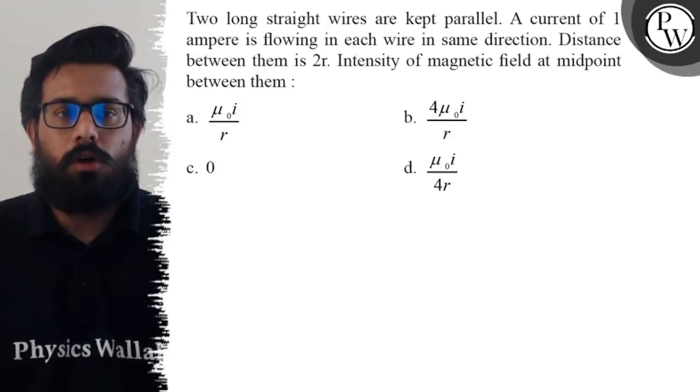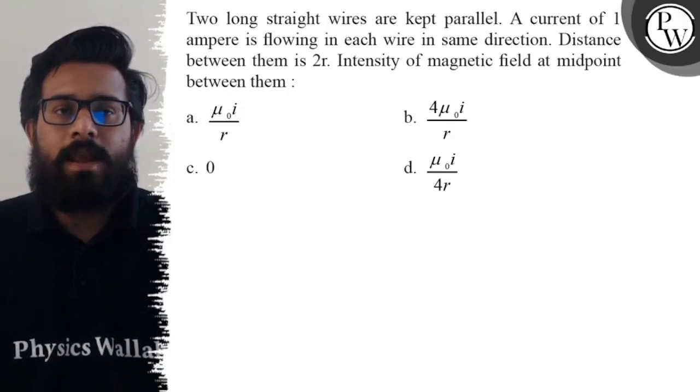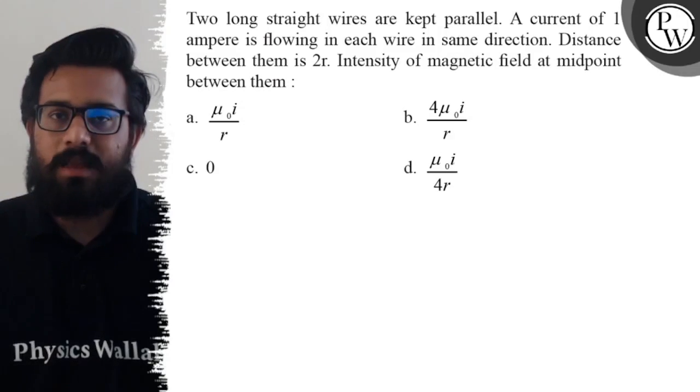Hello, let's see the question. Two long straight wires are kept parallel. A current of 1 ampere is flowing in each wire in the same direction. Distance between them is 2r. The intensity of magnetic field at midpoint between them is: